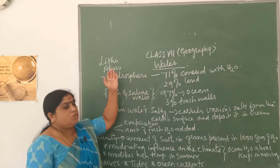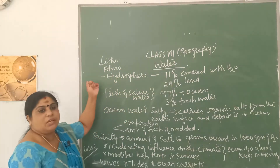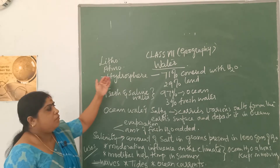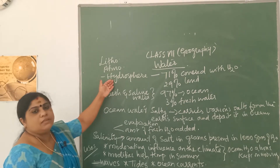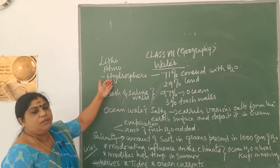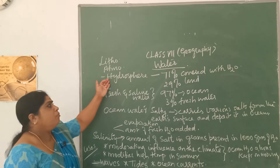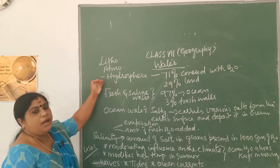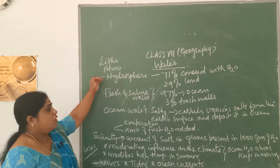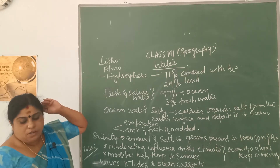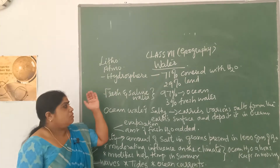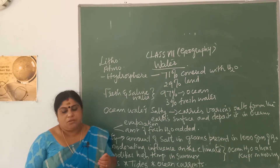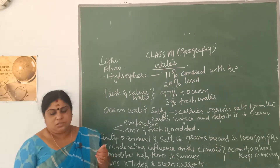You have learned what is lithosphere. You will learn what is atmosphere, and the water bodies you call as hydrosphere. You have learned about the three domains of the earth: lithosphere, atmosphere, and hydrosphere. So you are learning about hydrosphere. Hydrosphere means all the water bodies that you see on the earth's surface.